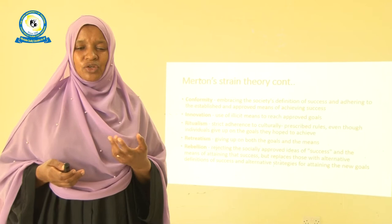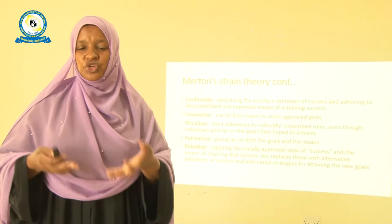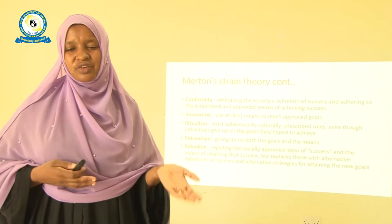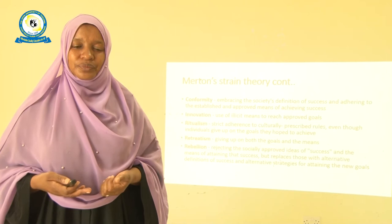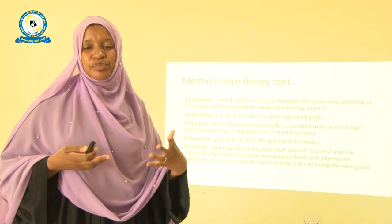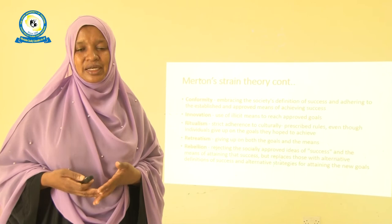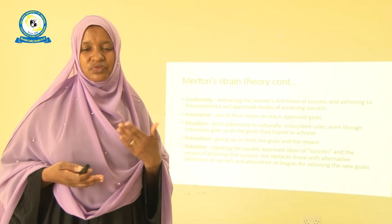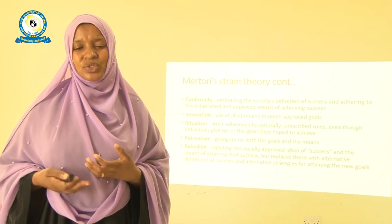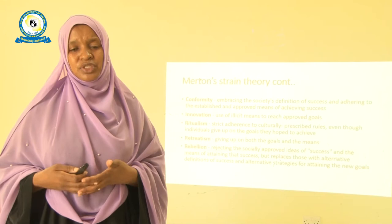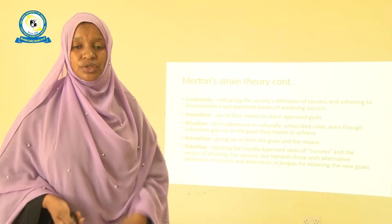Merton says society can go through what can be seen as retreatism — by retreating, you either give up the goals or the means, or both. When that happens, you have rebelled — rejecting society and its approved ideas of what success is. In the course of this rebellion, you replace the definition of success with alternative strategies for attaining new goals. And hence the importance of deviance in sociology.